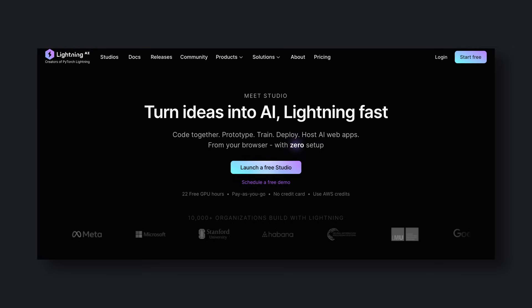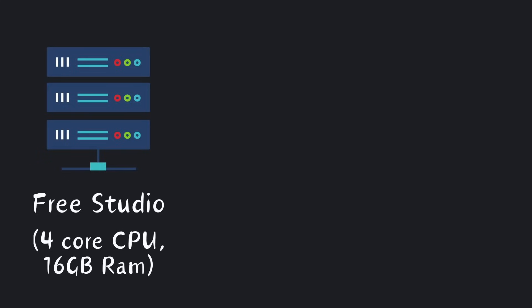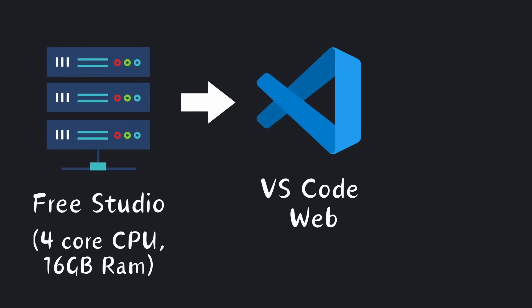Lightning AI. Lightning AI gives you a web-based VS Code interface. You get one free studio that can run 24-7, and you also get 22 GPU hours. This might get a little confusing, so I'll try to explain it in simple terms. With Lightning AI, you get one studio that is basically an instance with 4 cores and 16 GB RAM, with which you can interact through a web-based VS Code. You can run this 24-7 without any issues. They'll automatically switch it off when there's no activity, and then you can spin it up again when needed. You can use this instance as a simple VS Code instance whenever you need to code or do anything that you generally do with a computer.